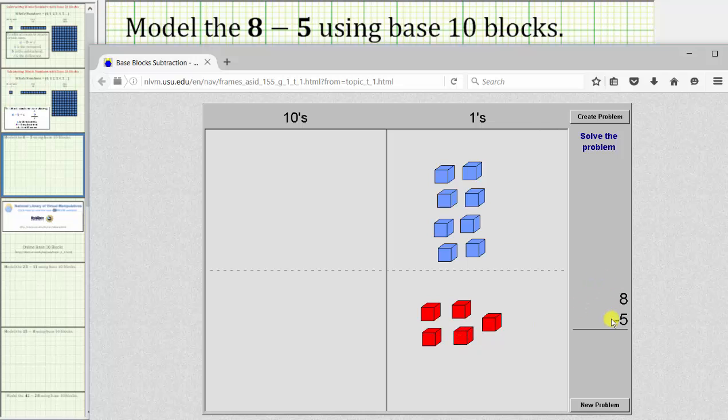Because the subtraction problem is 8 minus 5, we want to subtract or remove 5 units from 8. To do this, we will move the blue blocks down and place them on the red blocks. When we do this, they will simplify out. So because we're subtracting 5 from 8, we remove 1, 2, 3, 4, 5 from 8, leaving us with 3 units, showing 8 minus 5 equals 3.